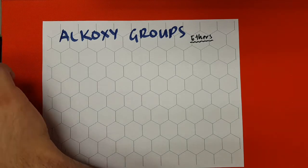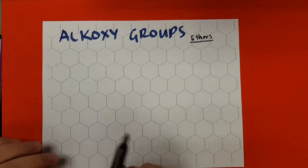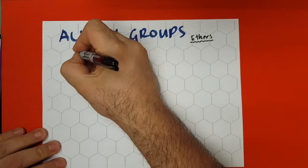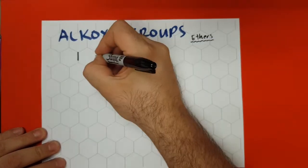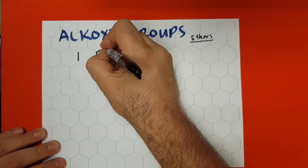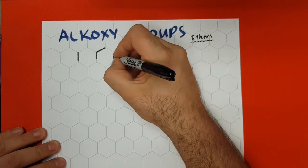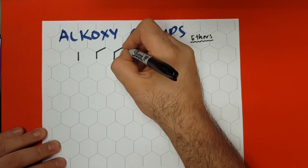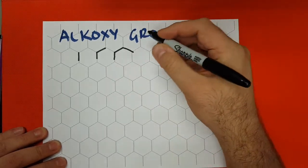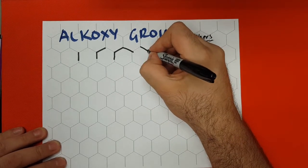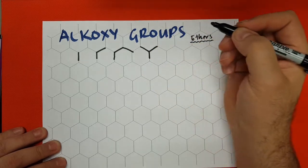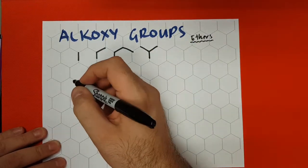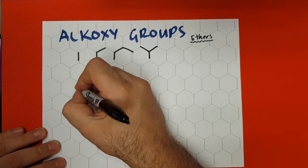So in this case, let's just sketch up a few of these groups. First, I'm going to draw methyl, and then I'm going to draw ethyl. I'm going to draw n-propyl — one, two, three. Then I'm going to draw isopropyl, and I'm also going to draw the butyls so that it's a little bit more clear.